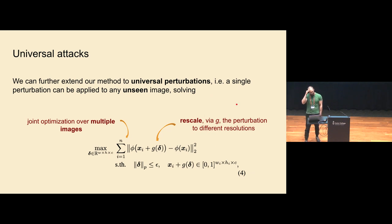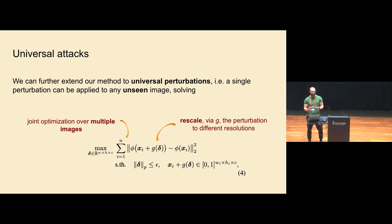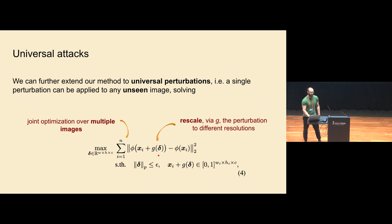So far we have considered image-specific attacks, creating a perturbation for each image. But a more interesting and challenging setting is universal perturbations — a single perturbation which can be applied to any image and lead to incorrect masks. This reduces the computational cost of the attack to essentially zero, since you compute it once and reuse it for any image and any prompt. One caveat is that images might have different resolutions, so we cannot straightforwardly apply a fixed perturbation to different images.